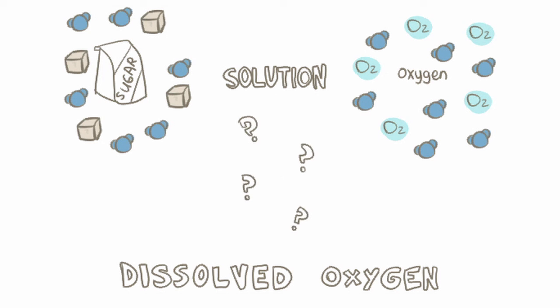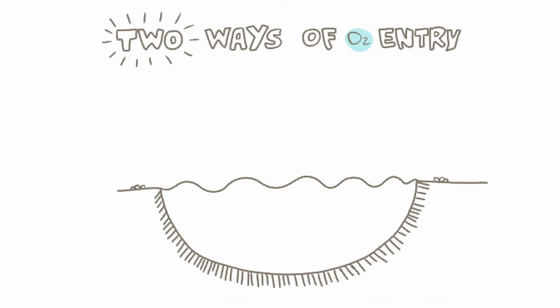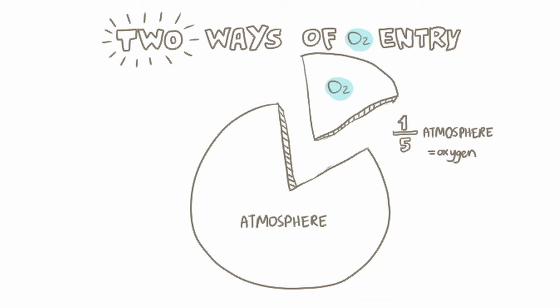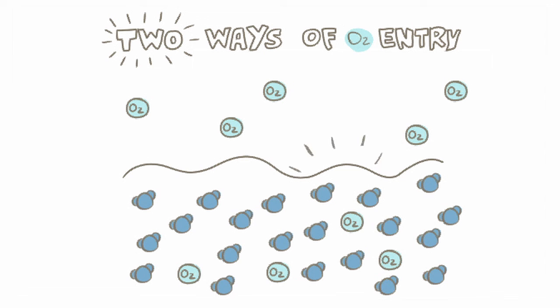But how does the oxygen get there in the first place? Well, there are two main ways that oxygen can enter a body of water, like the ocean or a lake. One way is from the atmosphere, or the air around us. Oxygen makes up about a fifth of the atmosphere, and these oxygen molecules are constantly bumping into and entering water.